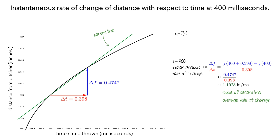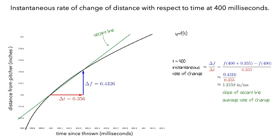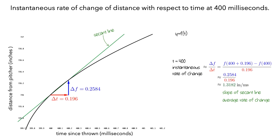We can see this in the graph because the slope of the secant line is now larger than it was previously. Let's move the second point even closer to 400 milliseconds. Note that the average rate has now increased to 1.3 inches per millisecond.